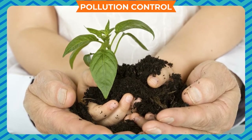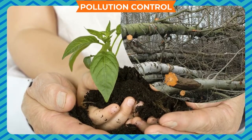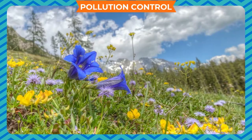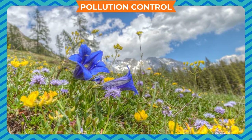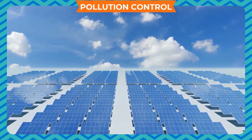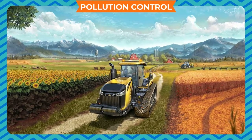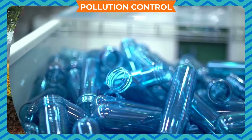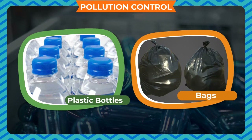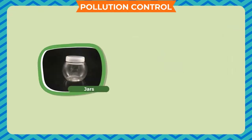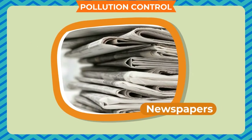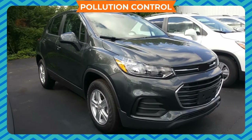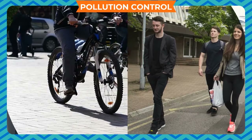Pollution control: We can do certain things to control different types of environmental pollution. We must discourage deforestation and plant more trees, because trees clean the air and give us oxygen. We should use solar energy to prevent air pollution. Pesticides and fertilizers should be used only in limited quantity in farming to avoid soil pollution. We should discourage use of plastic bottles, bags, etc., and recycle jars, bottles, and newspapers to control land pollution.